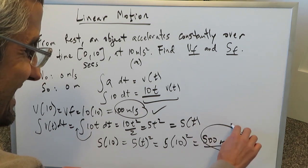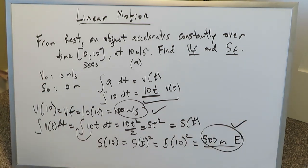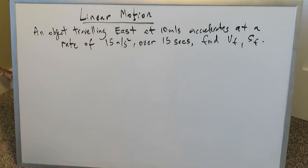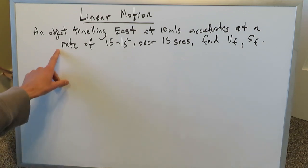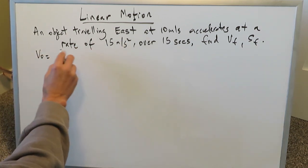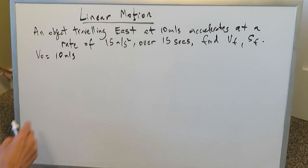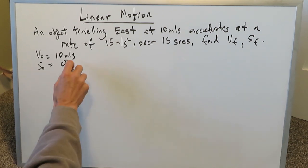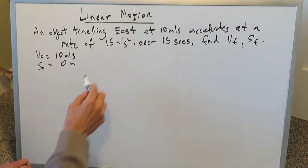Both methods give the same answers — 100 m/s and 500 m. The calculus way may seem harder to someone unfamiliar with integral calculus, but it's just as easy, if not easier. As questions get harder, the algebra way becomes more confusing, and the calculus way becomes easier. Let's look at another question: an object is traveling east at 10 meters per second and accelerates at a constant rate of 15 meters per second squared for 15 seconds. We have to find the final velocity and final position.